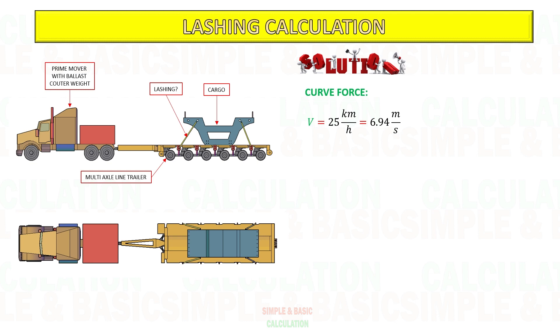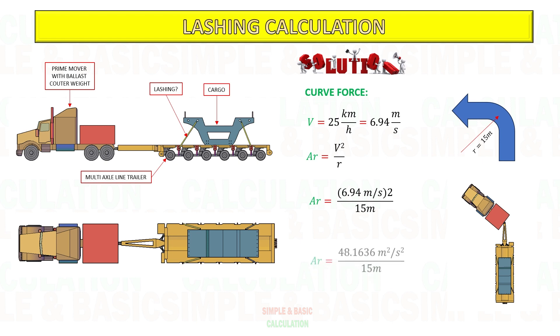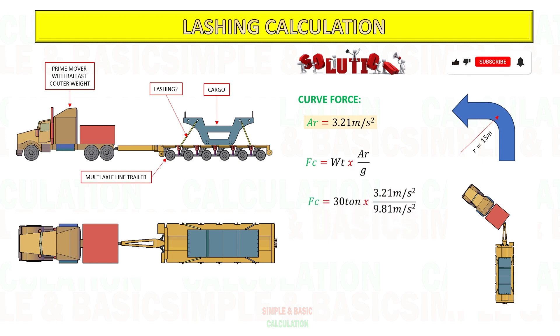Next, calculate the acceleration force at curve. During turning, I consider the truck decelerates to 25 kilometer per hour. To get the acceleration force, divide the truck velocity squared by turning radius. After getting acceleration, substitute the value to formula: weight of cargo multiply by acceleration at turning divided by gravity to get the curve force.